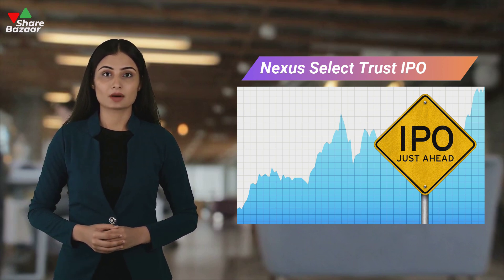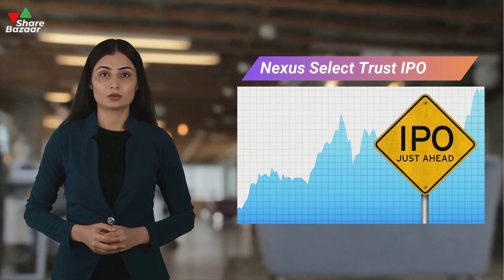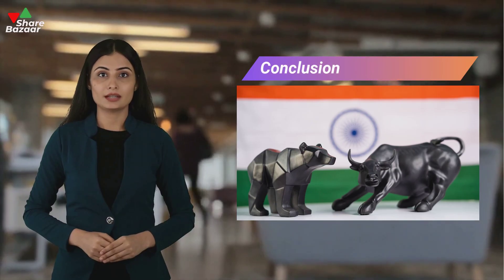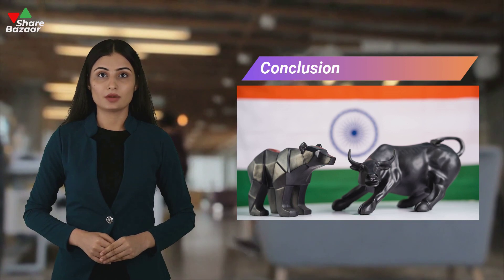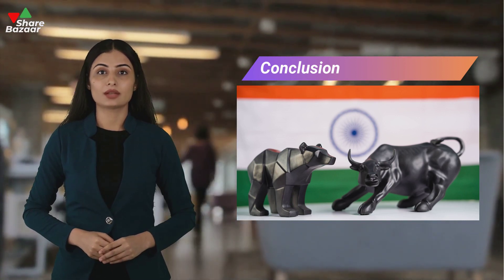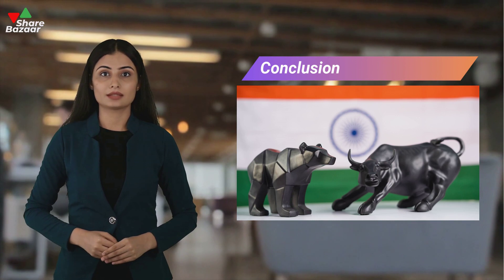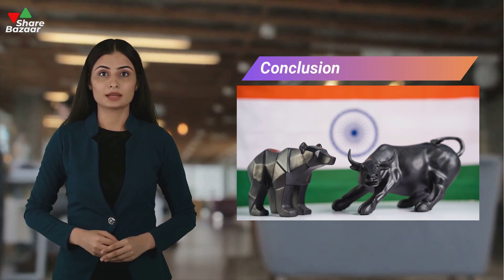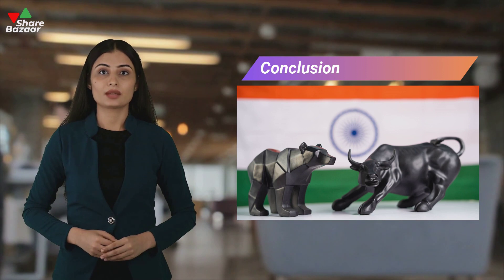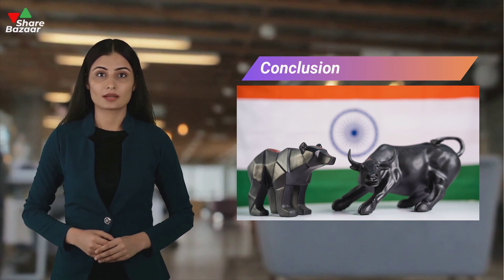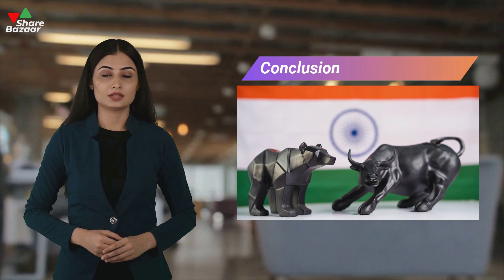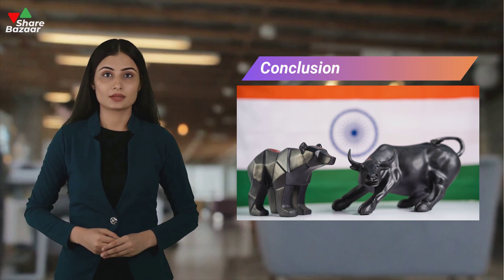Together, these categories account for the entire offering of 32,922,900 shares. In conclusion, Indian IPOs offer a variety of categories to cater to the diverse needs and preferences of investors. Understanding these categories is crucial for making informed investment decisions. Whether you are a retail investor, high-net-worth individual, or institutional buyer, there is an IPO category tailored to your investment goals.